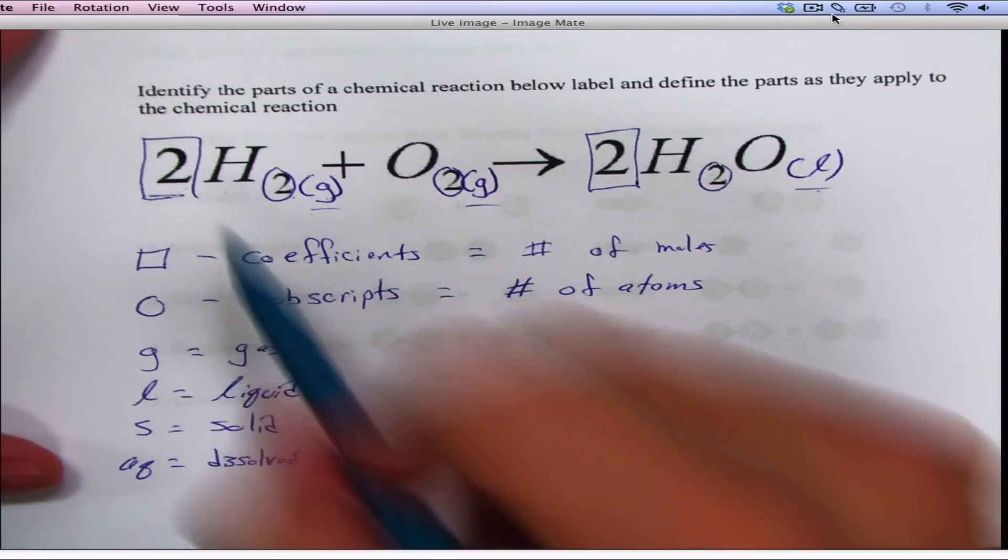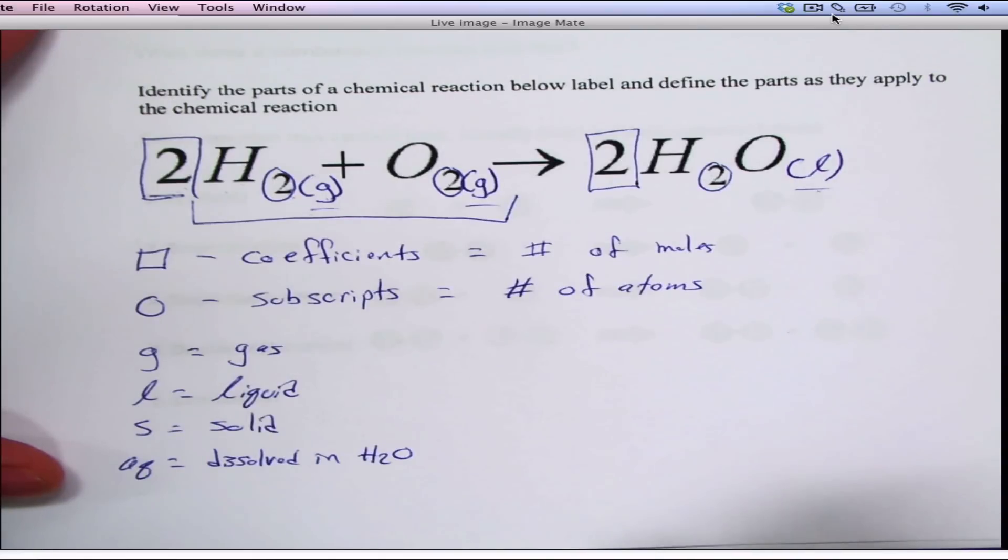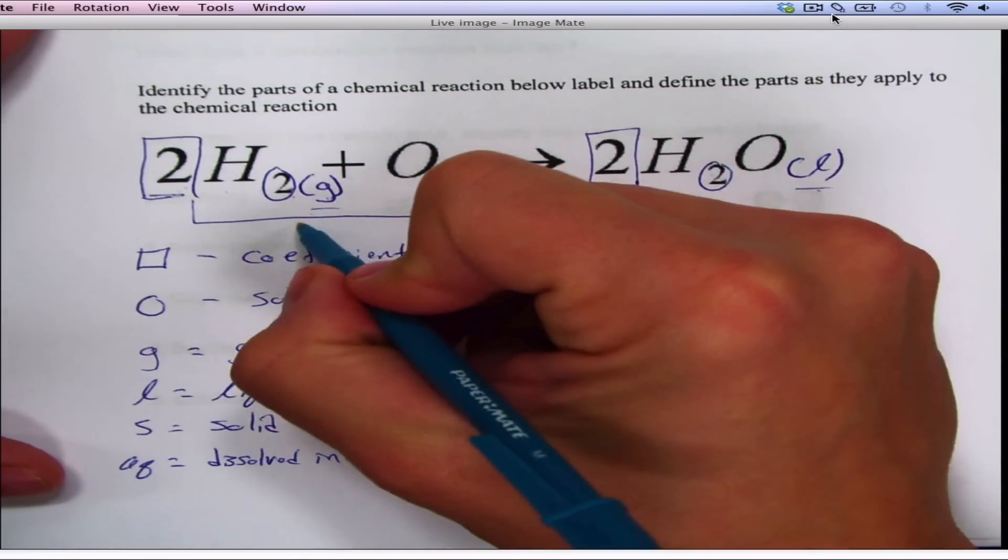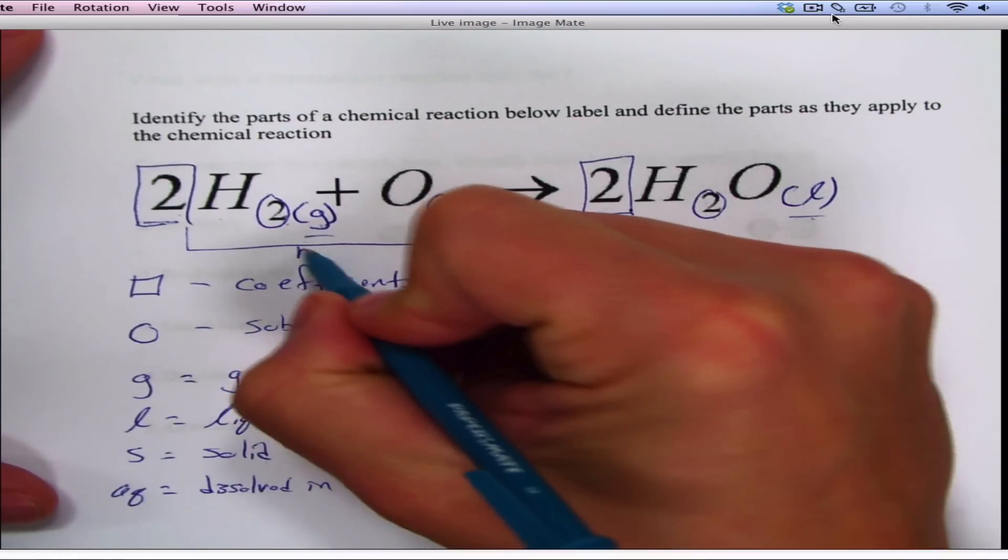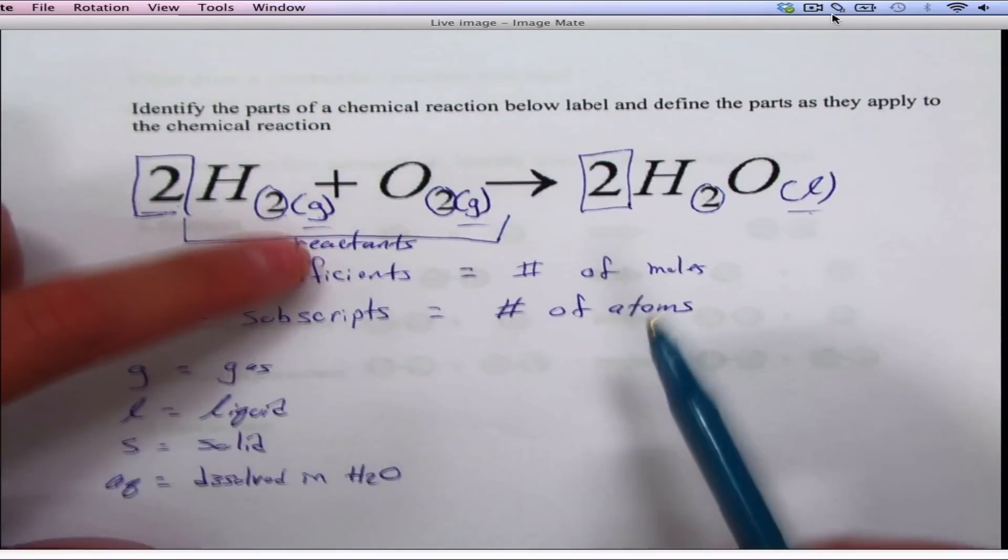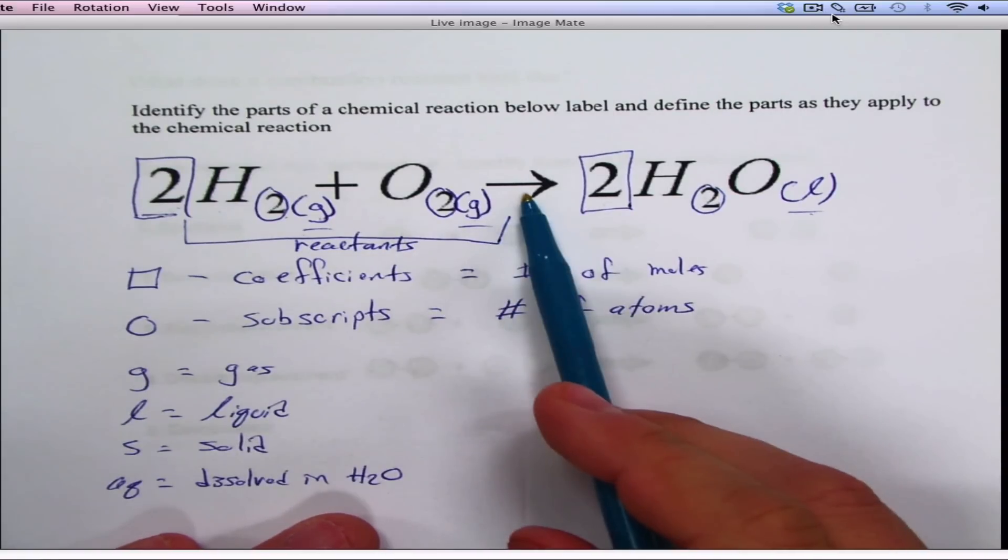Next part of the equation. This side of the arrow, right here, that's called the reactants. Notice the reactants are on the left side of the arrow, on the back side of the arrow, the opposite of where the arrow is going.